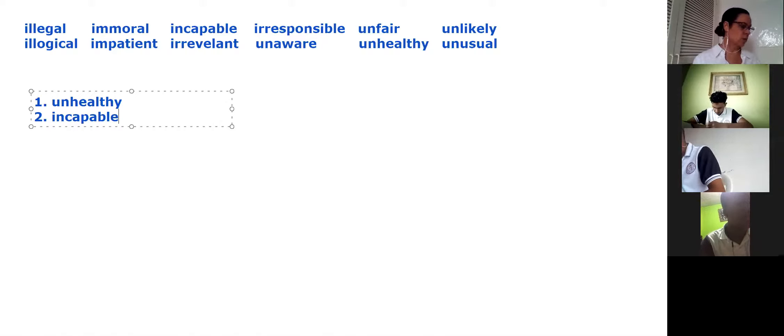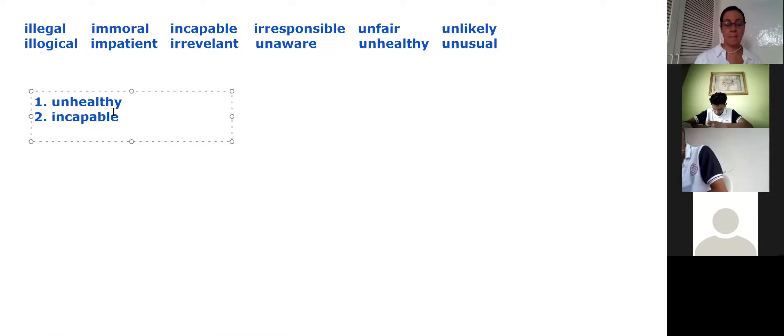Lucy doesn't get angry with Matt because she isn't blank. She doesn't get angry because she isn't impatient. No, it's not impatient. She's not angry. He's maybe late. He's incapable of being on time, but she's not impatient.